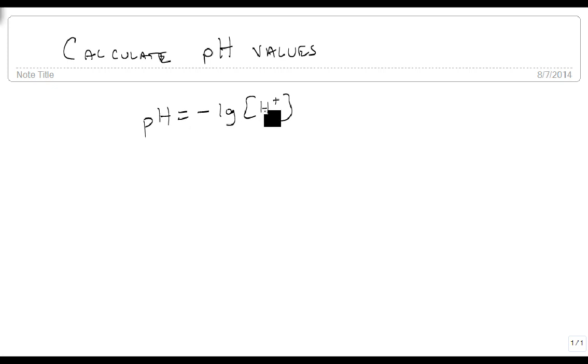So let's find pH first. Let's find the pH value if the H plus is equal to 2.68 times 10 to the minus 6.